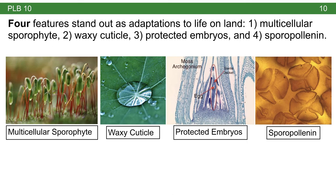Last is the feature sporopollenin — a special proteinaceous coating around spores that protects them from desiccation. When you transition to life on land, you have to have some way of dispersal. Sporopollenin is a coating that protects spores to allow them to travel further. In algae, you have swimming spores called zoospores. Once you get to land, you have airborne spores coated by sporopollenin.